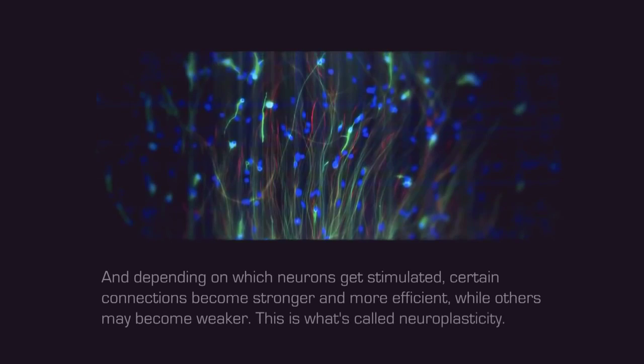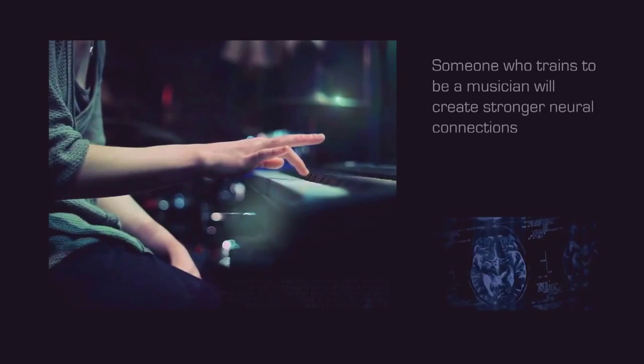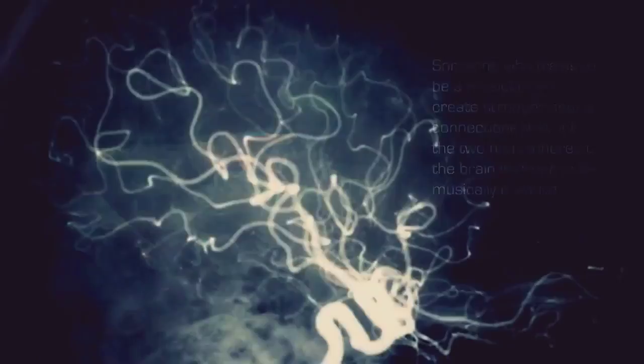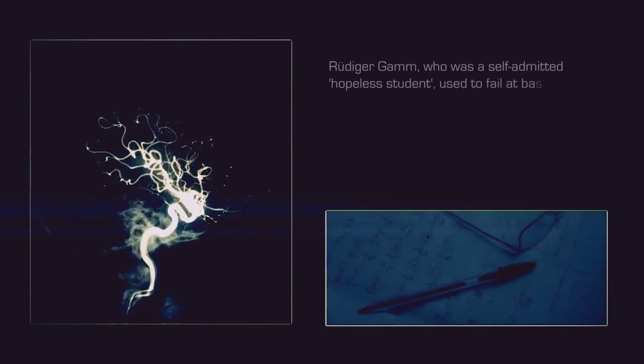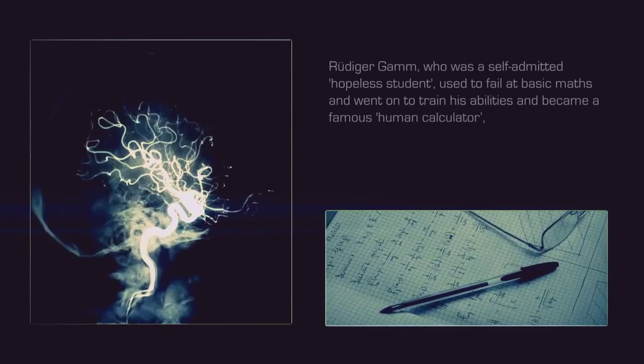Someone who trains to be a musician will create stronger neural connections that link the two hemispheres of the brain in order to be musically creative. Virtually any sort of talent or skill can be created through training. Rüdiger Gamm, who was a self-admitted hopeless student, used to fail at basic math and went on to train his abilities and became a famous human calculator, capable of performing extremely complex mathematics.